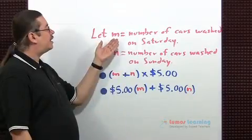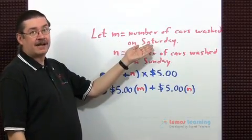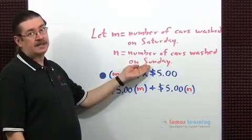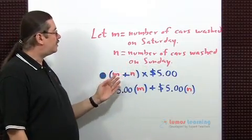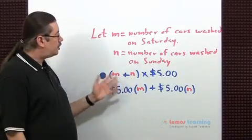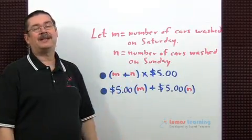So let's go ahead and let M equal number of cars washed on Saturday, and N is going to equal the number of cars washed on Sunday. Replacing the numbers with the variables, I get the following expressions. You can actually show that these two are equivalent by applying the distributive property.